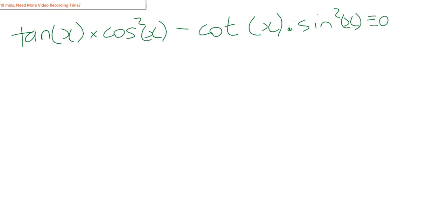So, tan x is the same as sine over cos, okay? So that's going to be sine x over cos x times cos squared x.